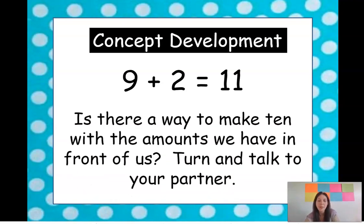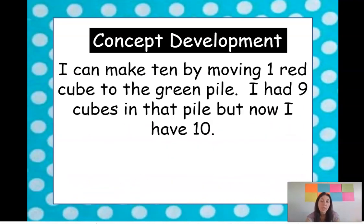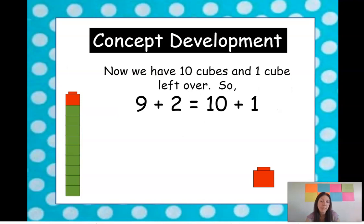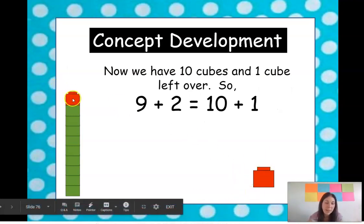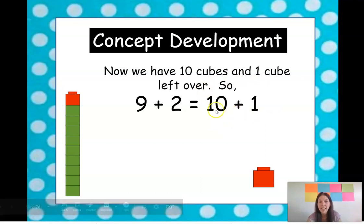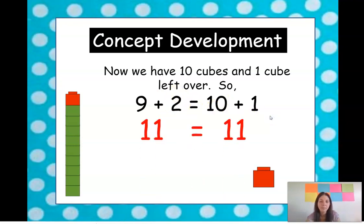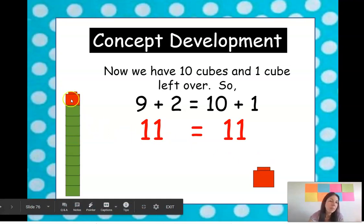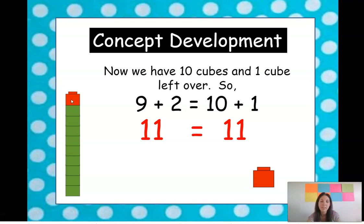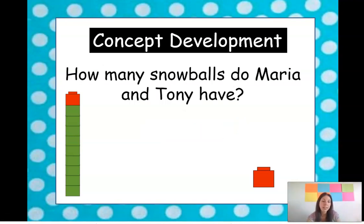We want to use these numbers to make a ten. We can move one red cube to the green pile — take one red cube and move it over here. Now we have a group of ten. And how many is left over here? One. So our new problem is ten plus one. They put this equal sign here because we started with nine plus two, and that is equal to — the same answer as — ten plus one. They both equal 11. We just moved the cube from over here and put it over here, and that made it easier to add. How many snowballs do Maria and Tony have? 11 snowballs.